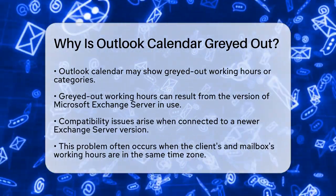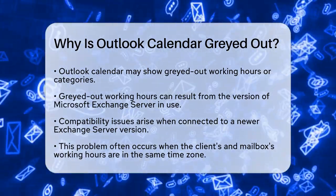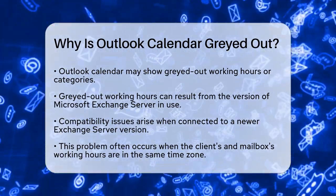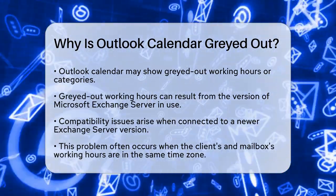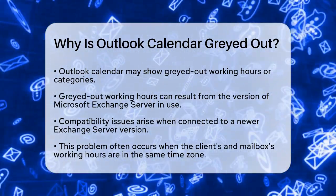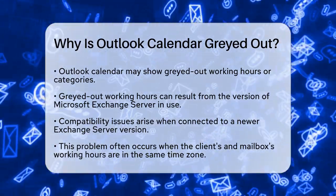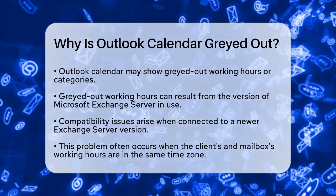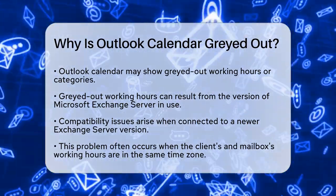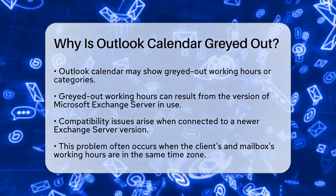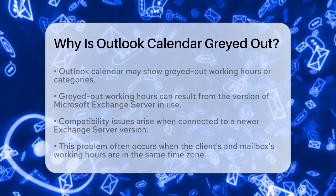First, if you're seeing working hours displayed as gray in the Outlook Calendar, it might be due to the version of Microsoft Exchange Server you're connected to. When Outlook is linked to a newer version of Exchange Server, it can't handle all the new elements like weekdays, weekend days, and all days properly. This issue is particularly common when the working hours of the client and the mailbox are in the same time zone. This behavior is expected, but there's a fix.